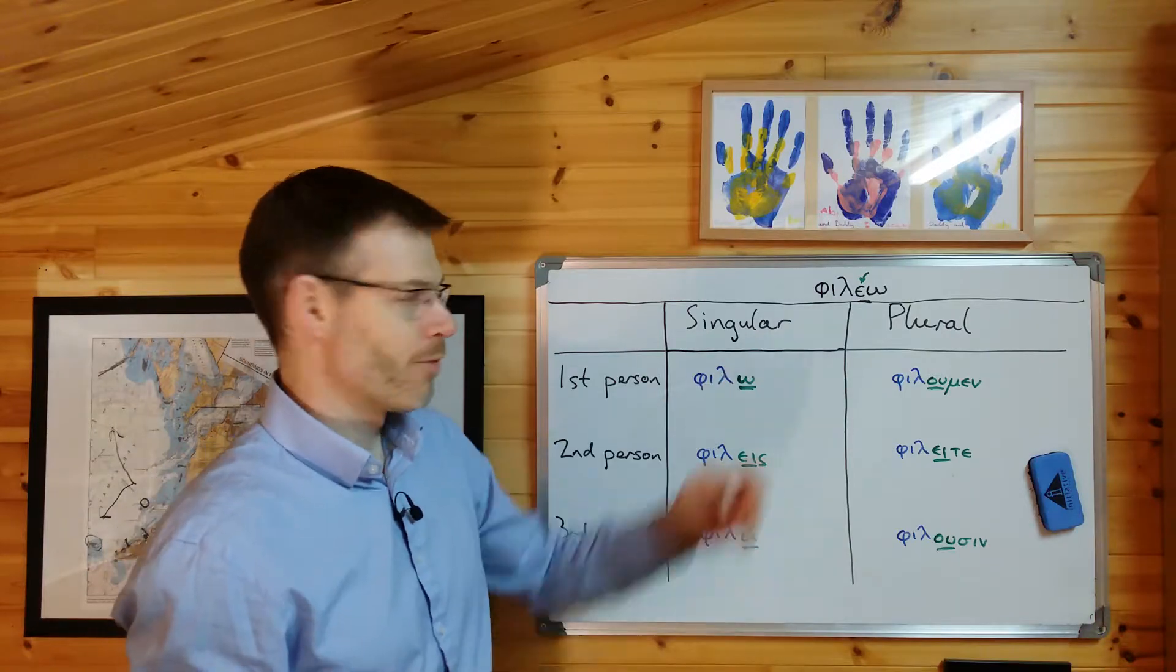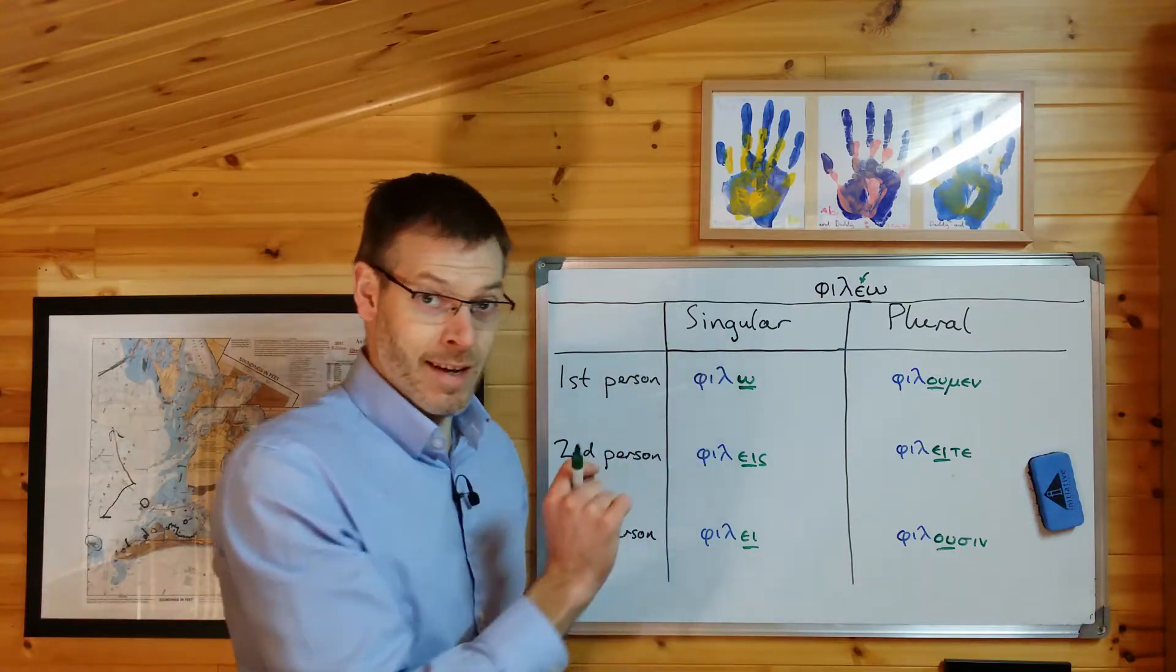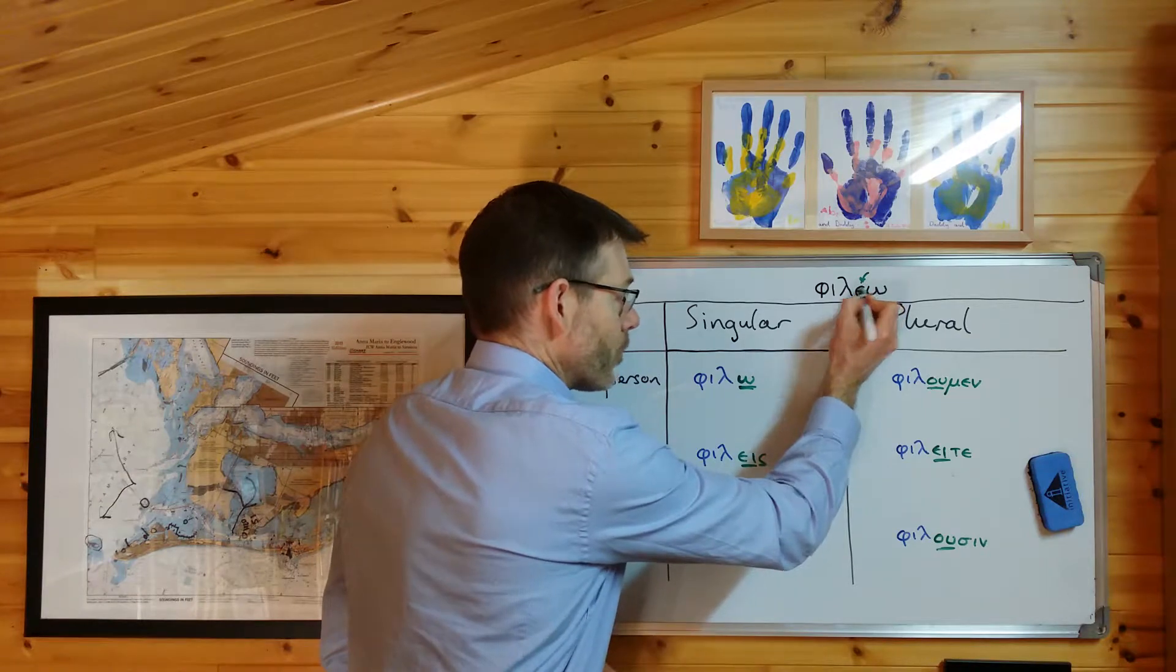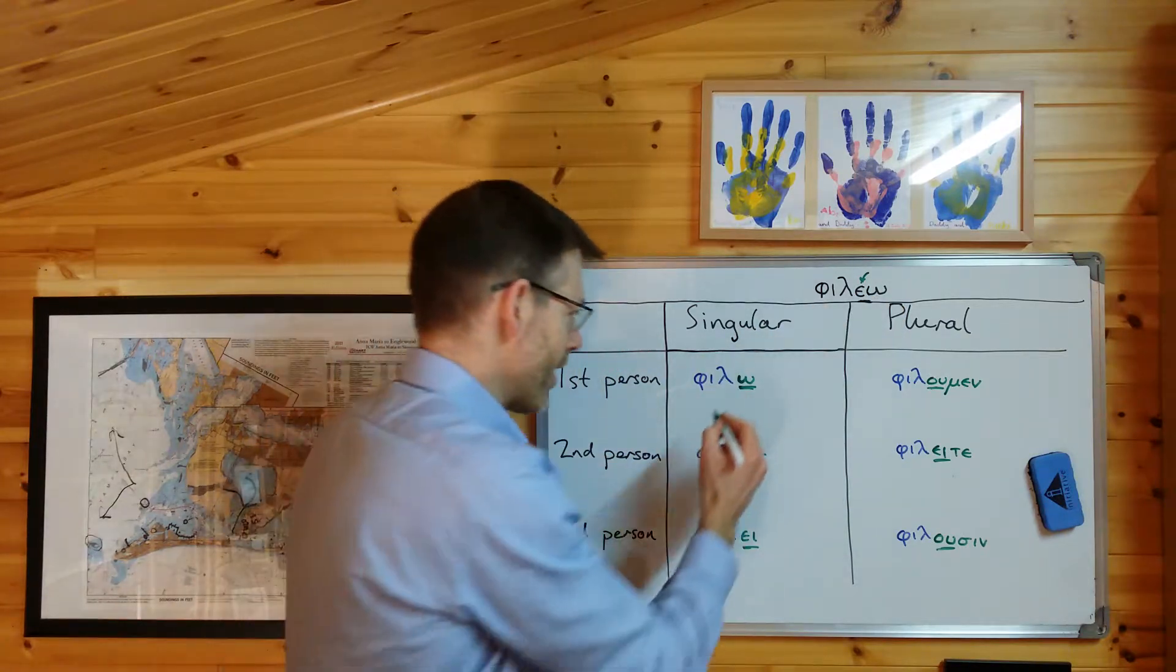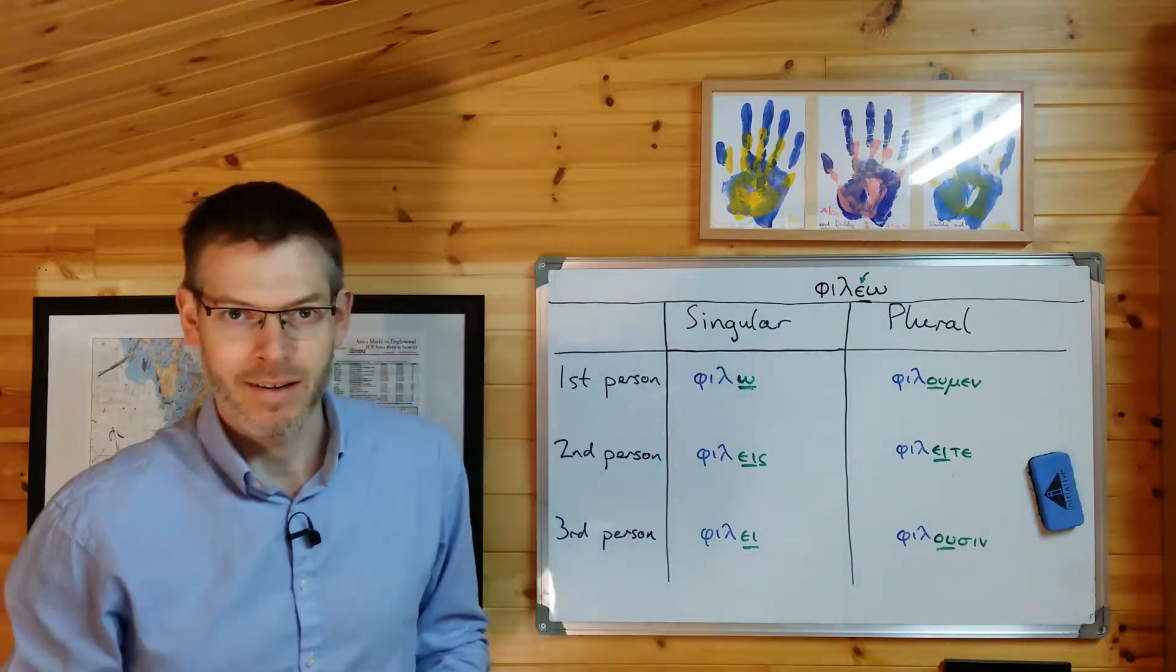The lexical form of φιλέω is φιλέω, even though you'd never see this in writing, because this would have disappeared, being weak and displaced by that long vowel.